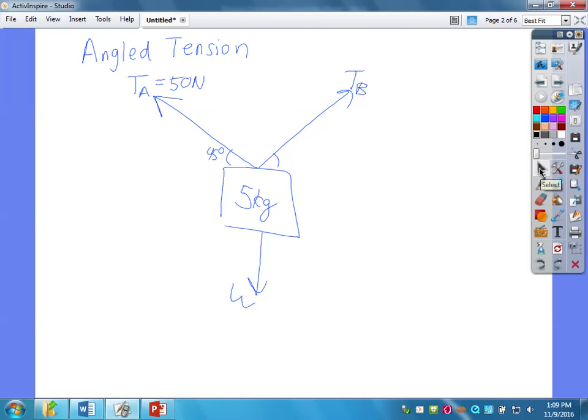Instead, I need to look at this from a component standpoint. From a component view, I can change this force into two components. Just like we did with velocity back in projectiles, we can do this with force. Force is a vector, so it has magnitude and direction, and that means I can change it into two components, which I'm going to simply call TAX and TAY, an X and Y component. I can do the same thing with TB. TB can be separated into two components, TBX and TBY. Now, I have forces straight up and down and left and right, and I can talk about what these possibly mean.